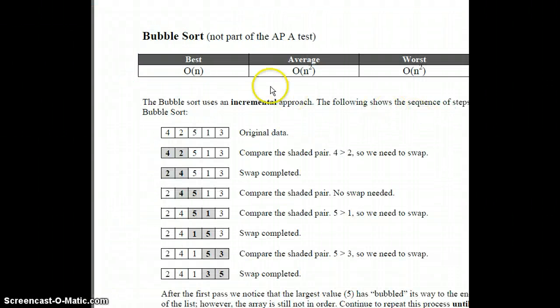The first type of sorting is bubble sort. But since it's not going to be on the AP exam, we're not going to spend time on it. The only thing you'll need to know about bubble sort is that it looks at two numbers, compares them, and whichever one's lower goes in the front. So it looks at four and two. Two is lower than four. So they swap.